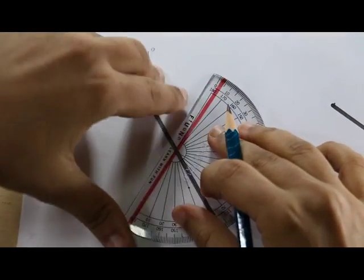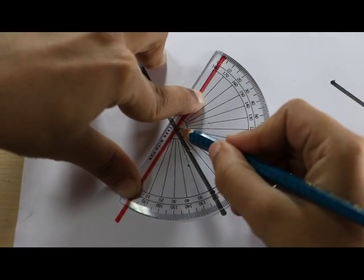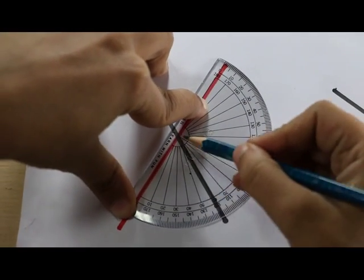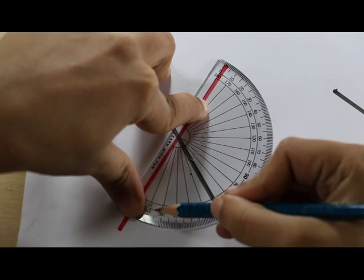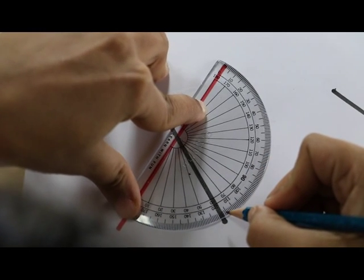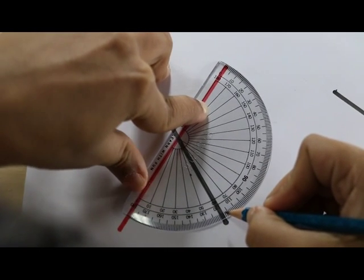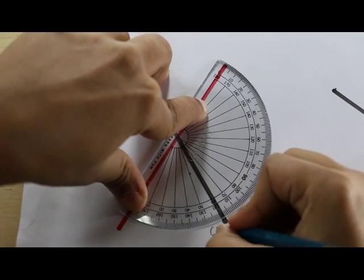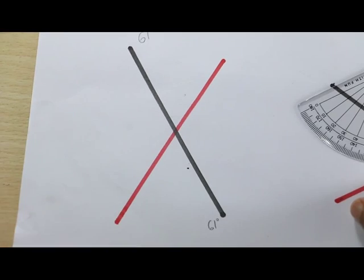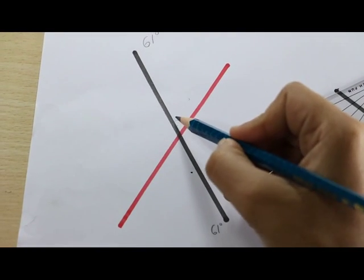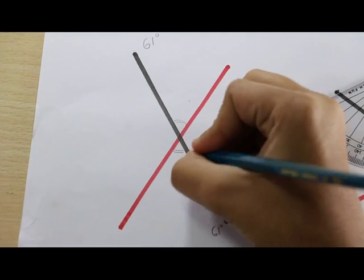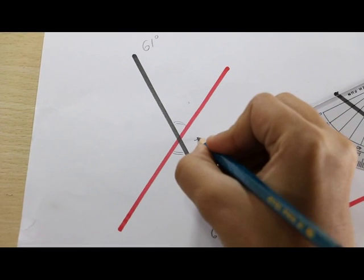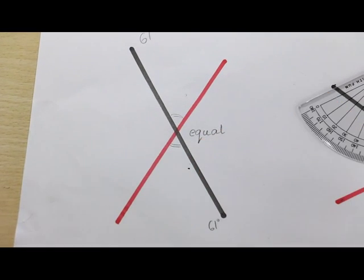Let's now try this on the opposite side. Again, midpoint of the protractor on the point of intersection and the bottom line of the protractor on the red line. The angle now formed is again 61 degrees. This means that the vertically opposite angles are in fact equal.